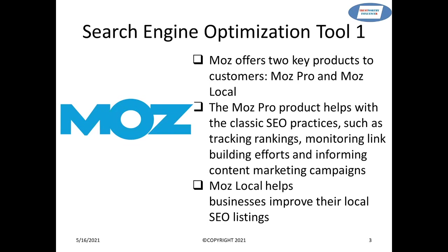The first tool I'm going to talk about is Moz. Moz is a great tool for search engine optimization, and they have essentially two products: one is Moz Pro, and the other is Moz Local. Let me talk about Moz Local first.